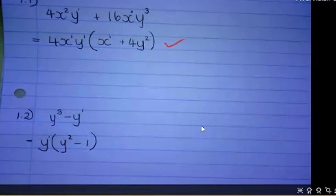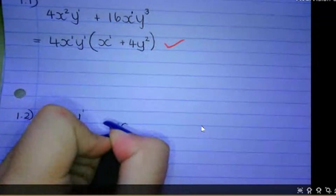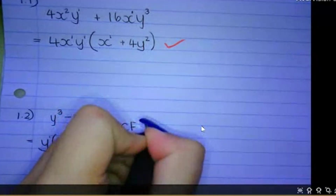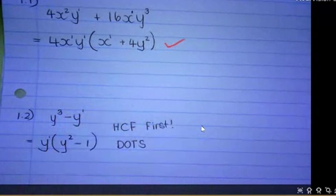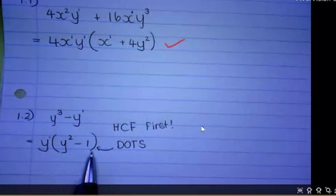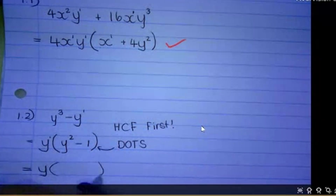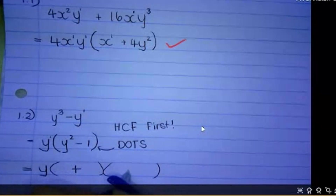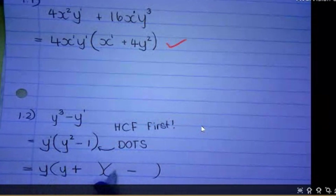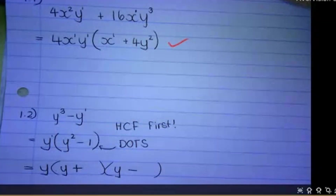Now look at that and you should see you need to go further — we need to do difference of two squares (DOTS). HCF first, then DOTS. Look at this bracket: there are two terms, a minus between them, it's a square number, and an even exponent — so we can do DOTS. The framework: this bracket splits into two brackets, a plus in one and a minus in the other. Because it's y squared, we're going to have y and y, and the square root of 1 is 1.